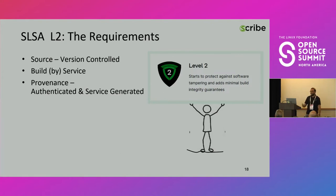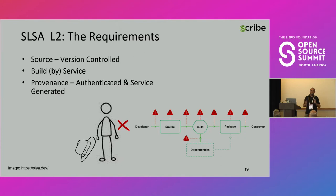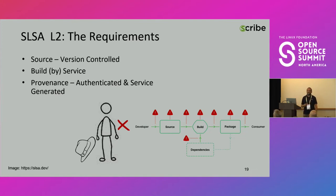SALSA level 2 adds additional requirements: the sources should be version controlled, the build should be done by a service, and the provenance should now be authenticated and service generated. Before jumping into implementing this, I put back my hacker hat and tried to understand the value of these requirements. It boils down to separating the build from the programmer's environment — if the sources are version controlled, sources reside somewhere not on the developer machine, which serves as a forensic tool and a deterring mechanism.